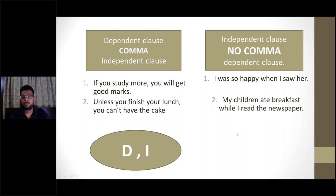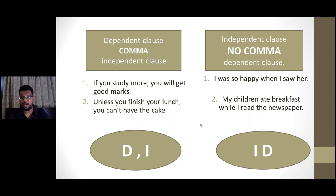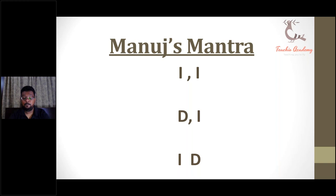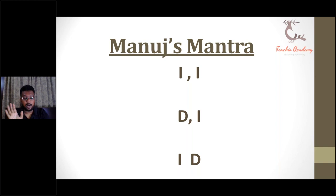Another example: 'My children ate breakfast while I read the newspaper.' Again, independent then dependent — no comma in between. The trick is Manut's mantra: whenever you have independent + independent (II), dependent + independent (DI), or dependent + dependent (DD), place a comma in between. But whenever you have independent + dependent (ID), no comma in between. In all cases except ID, use a comma.